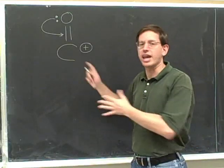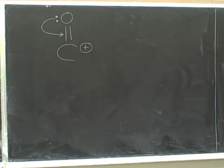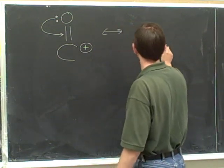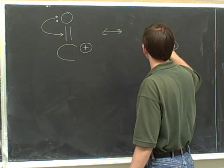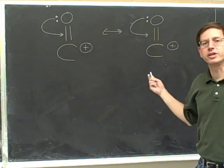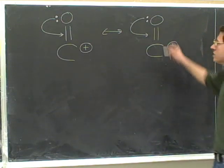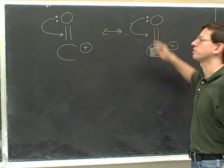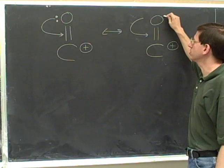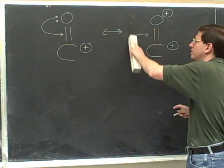Try to draw the resonance structure indicated by this electron-pushing arrow. While we redraw, remember to double-check that you redrew correctly. Here's our initial tail — it's coming from this lone pair, so we need to erase the lone pair. Because it's an initial tail, we need to change a charge. This oxygen started neutral and it's losing electrons, so it becomes positive. Now we've dealt with the tail and we can erase it.